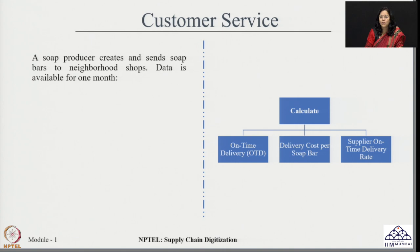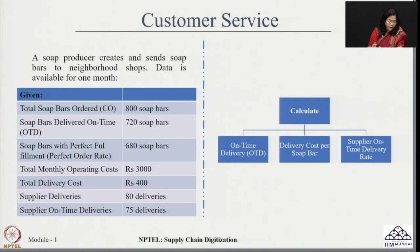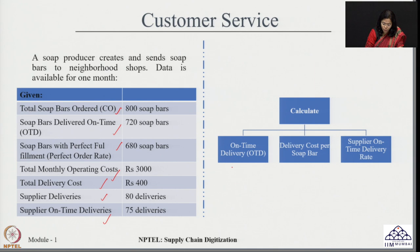Let us analyze some KPIs for customer service. Consider a soap producer who makes soap bars and provides them to neighborhood shops. The data available includes total soap bars ordered, soap bars delivered on time, perfect order rate, total monthly operating cost, total delivery cost, supplier deliveries, and supplier on-time deliveries. Using this data, we want to calculate on-time delivery, delivery cost per soap bar, and supplier on-time delivery rate.